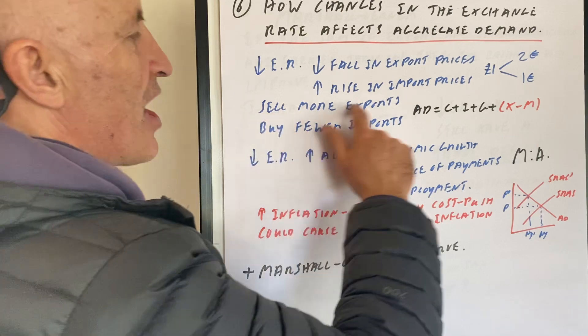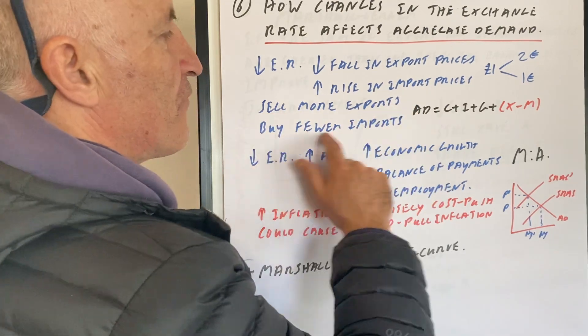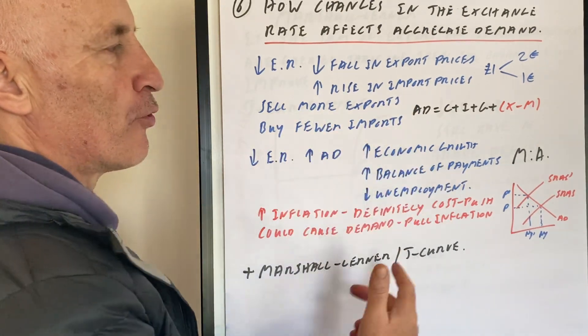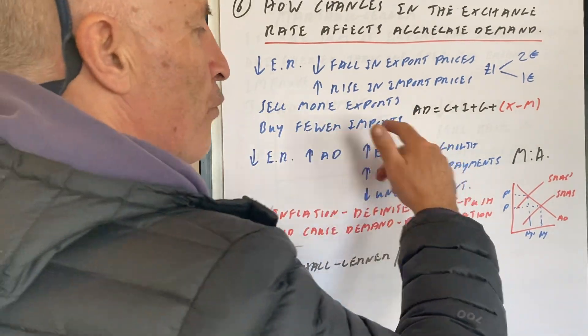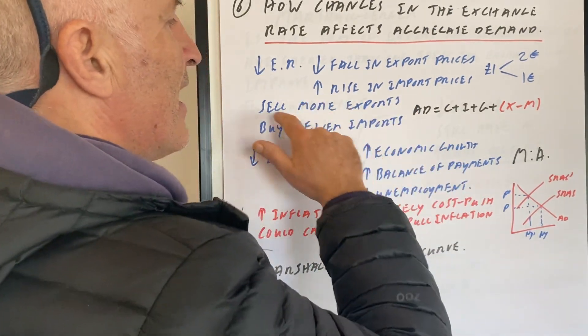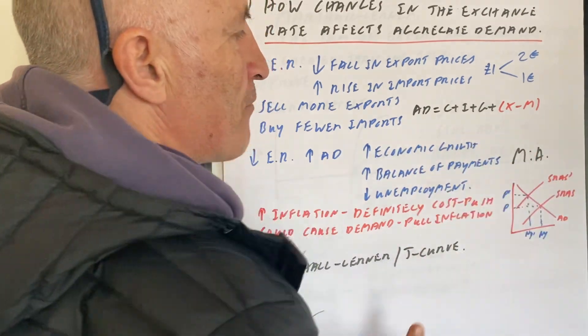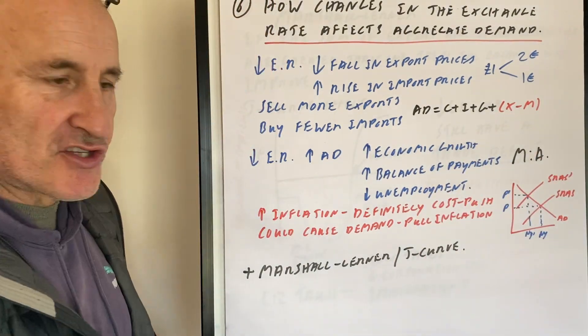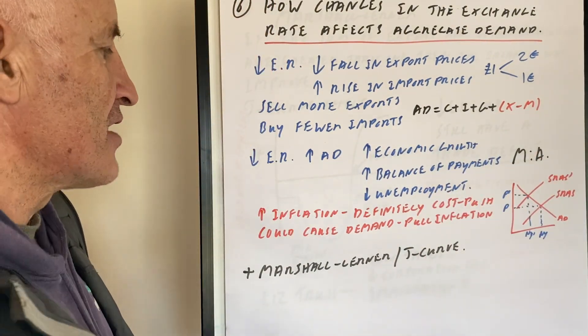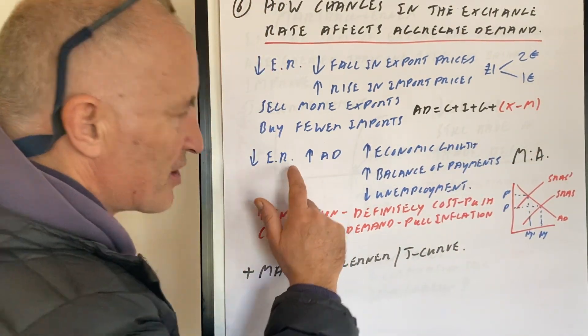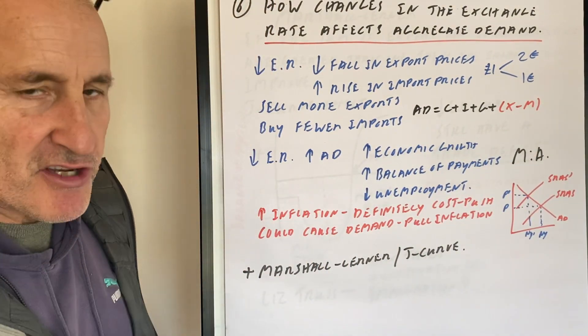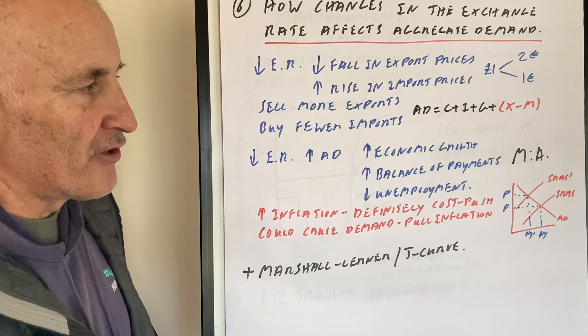So if you sell more exports and buy fewer imports, that will lead to a rise in aggregate demand. This is one of the key things to remember: if the exchange rate goes down, there is an increase in aggregate demand.